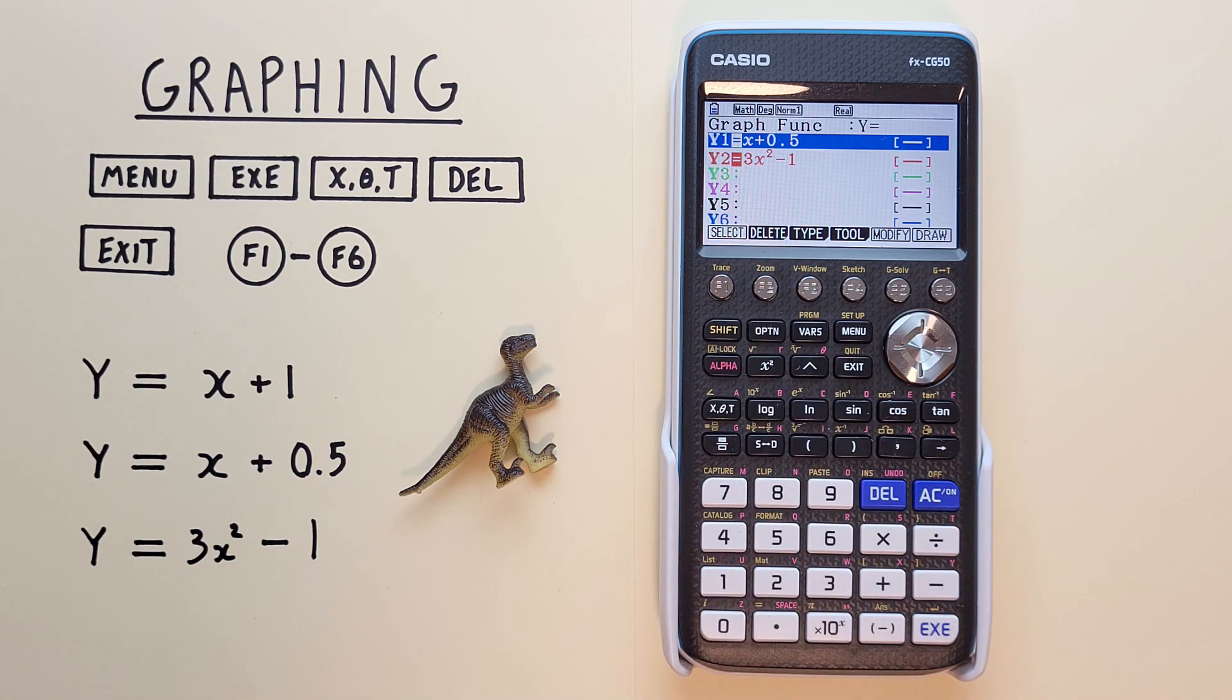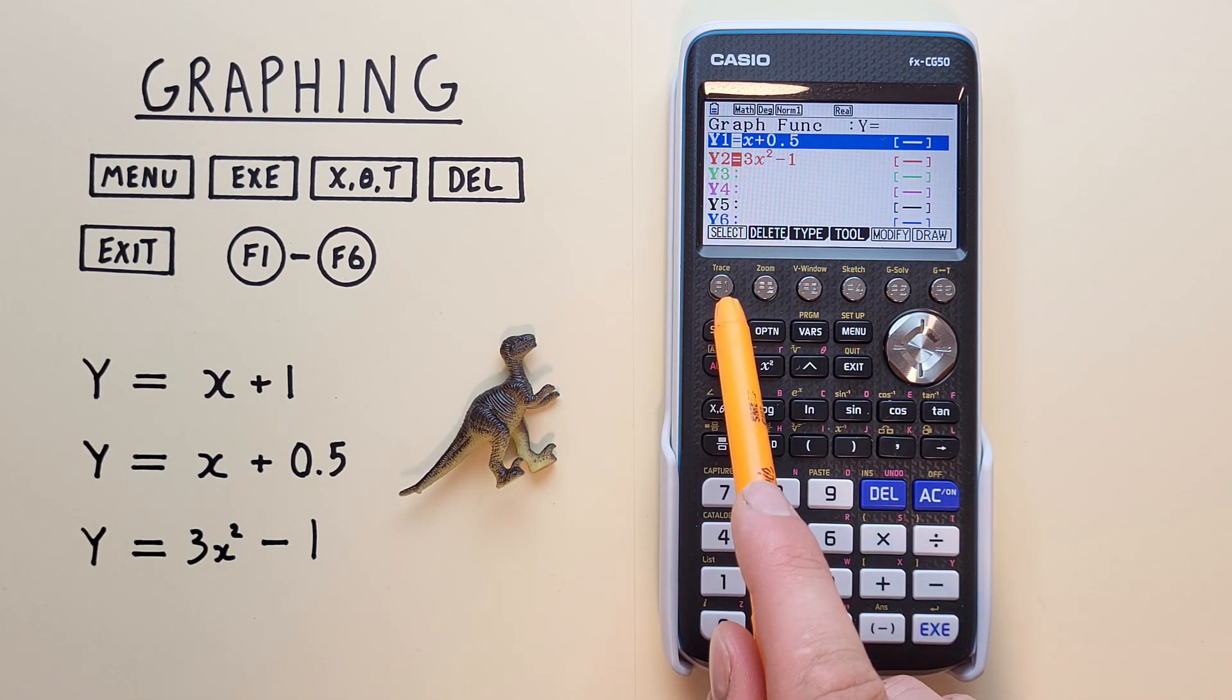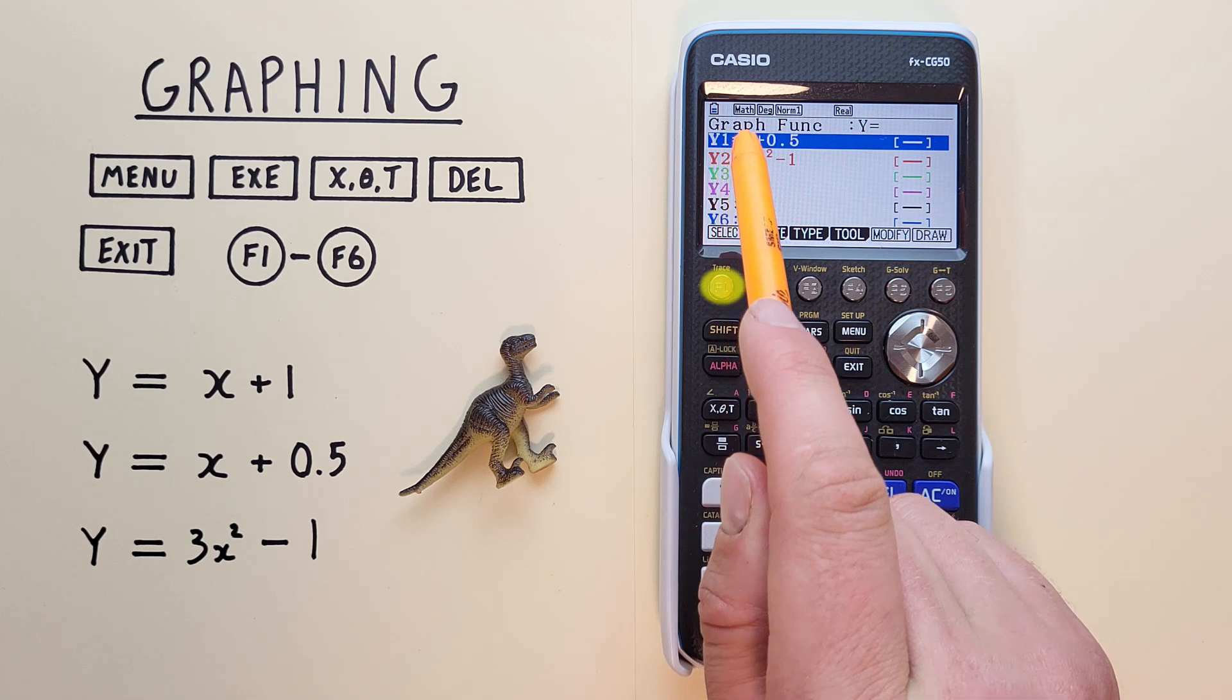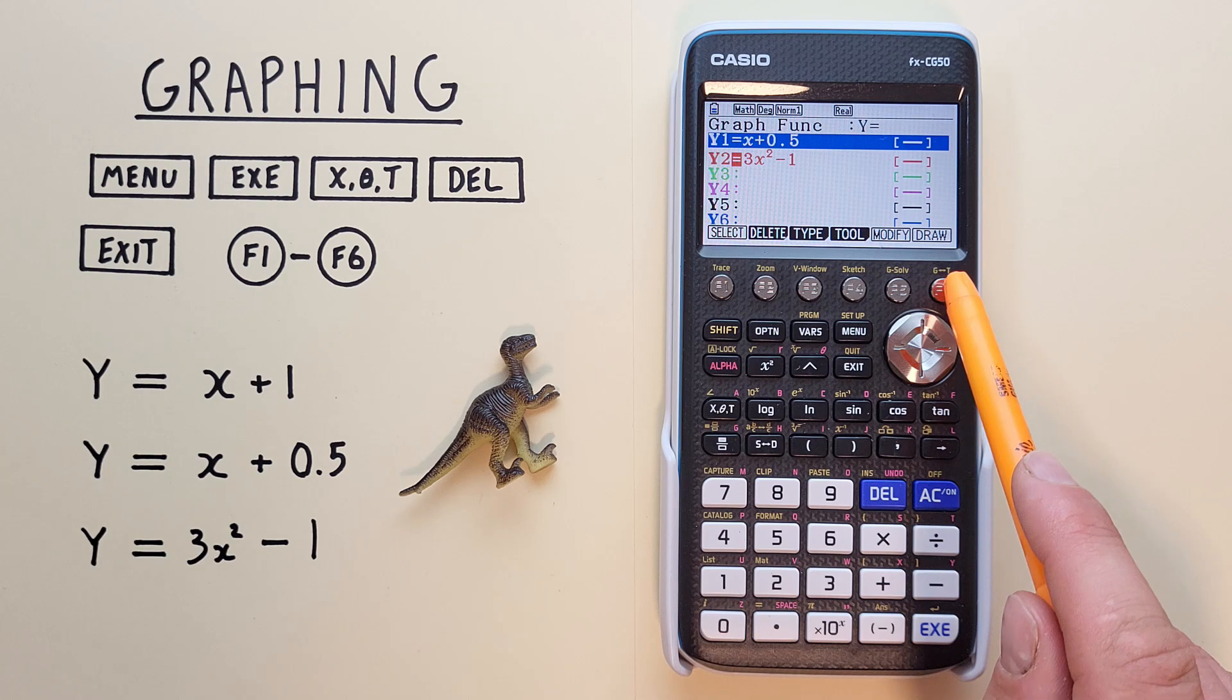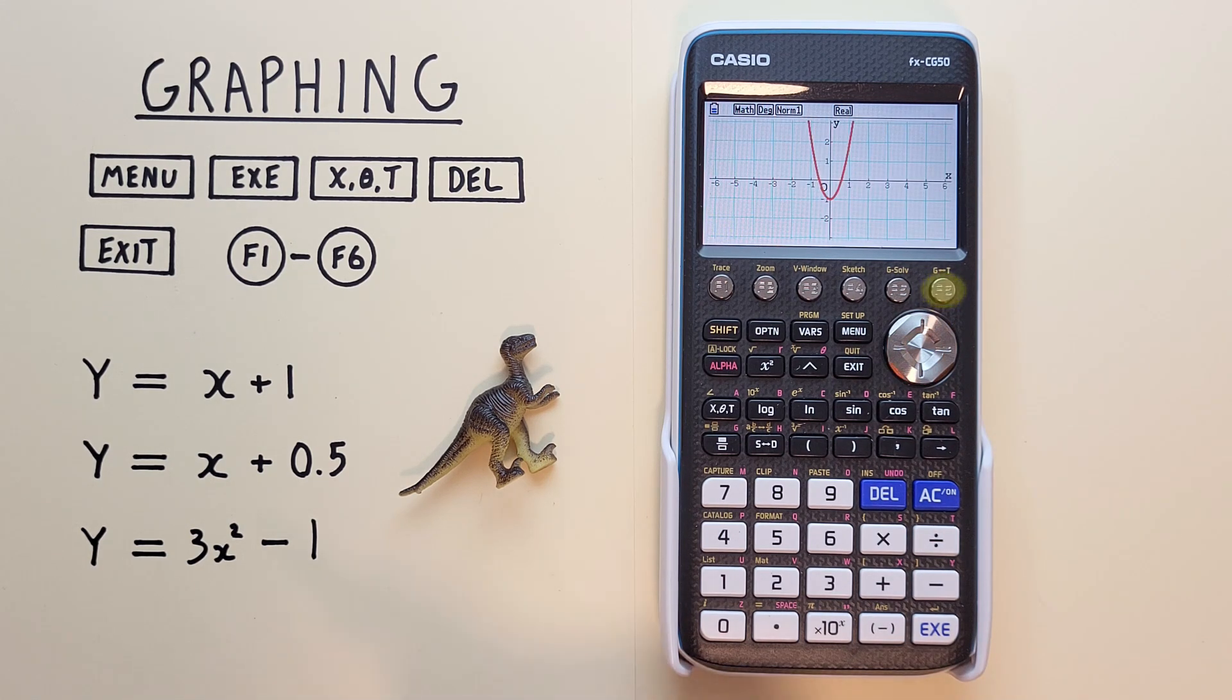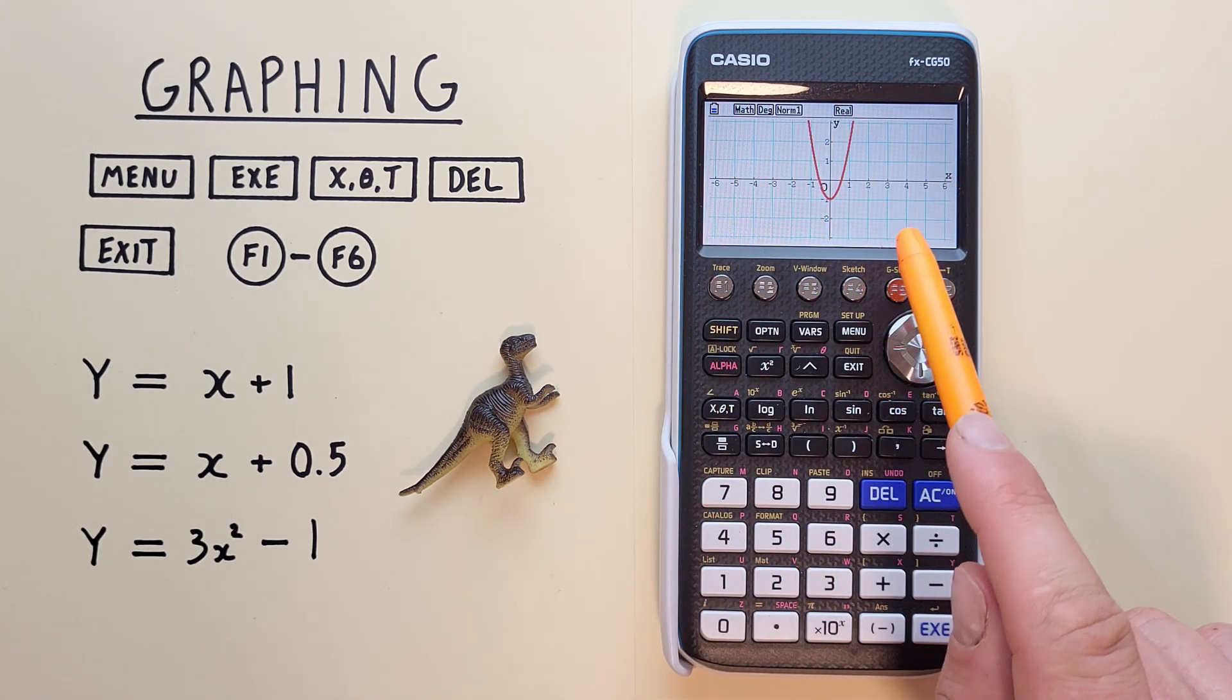We can do that by highlighting it, and then hitting F1 Select, so that the highlight on the equal sign is turned off. And now if we hit Draw, we see that line is no longer visible on our graph.